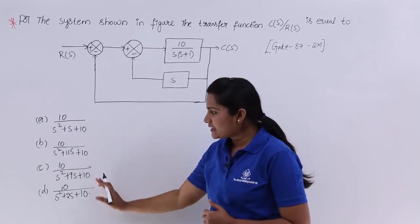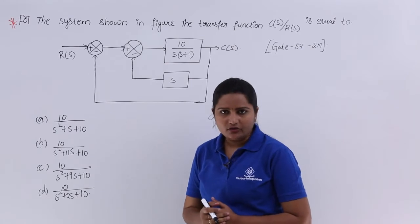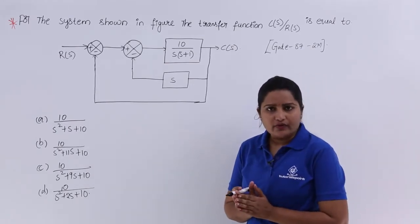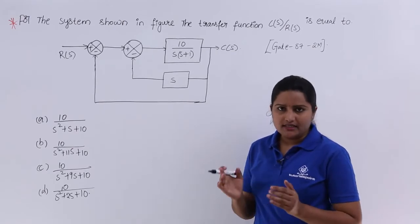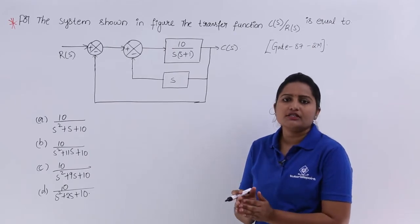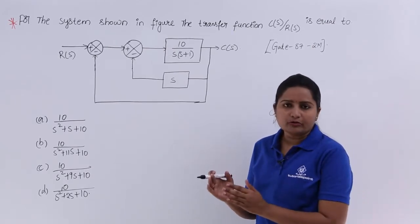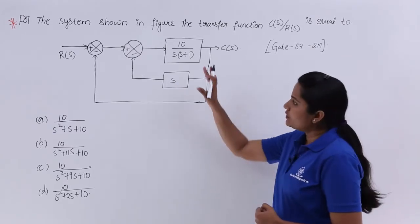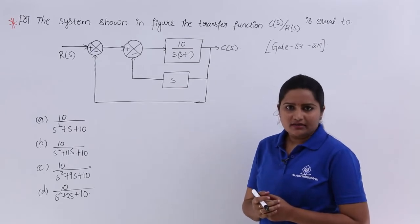The transfer function options are given. When a complex block diagram is given, we need to reduce the number of blocks into a single block between input and output using block diagram reduction steps. Looking at the diagram, we identify which types of connections are present.